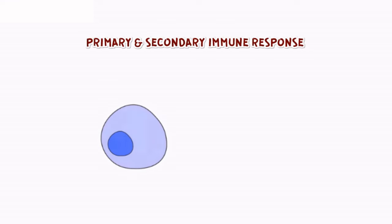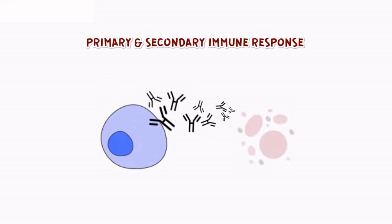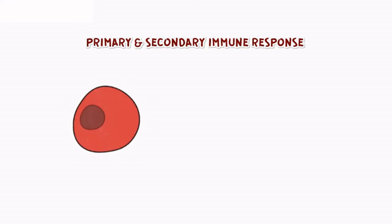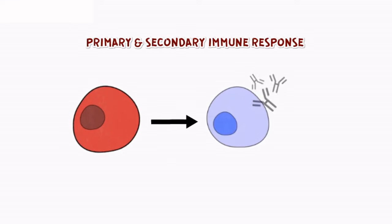The B cells produce an army of proteins in response to pathogens into our blood to fight with them. These proteins are called antibodies. The T cells themselves do not secrete antibodies, but help B cells produce them.